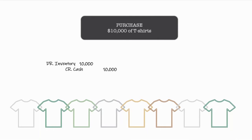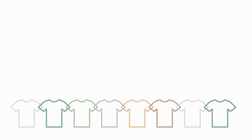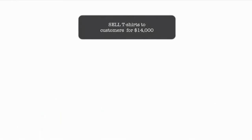At the time of the purchase of those t-shirts, notice the only impact is to the balance sheet. There is no expense that is occurring for the company in the financials — just cash going out, inventory coming onto the balance sheet. We don't actually account for the purchase of those t-shirts as an expense in the financial statements until those t-shirts are later sold.